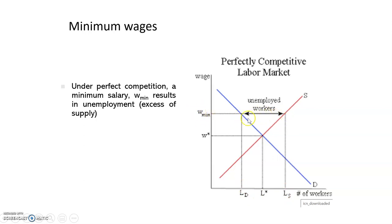So all the workers that are between LS and LD will be unemployed, because firms will not hire more workers than LD. This increase in the minimum wage when it is above the market clearing wage will end up with unemployment. The unemployment is exactly this quantity: LS minus LD.